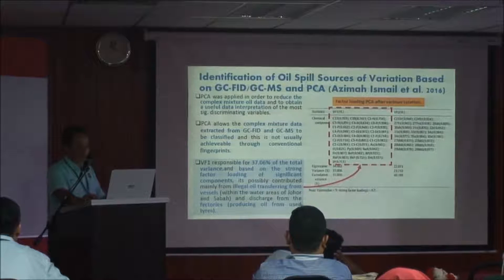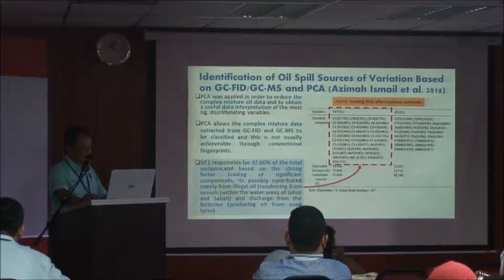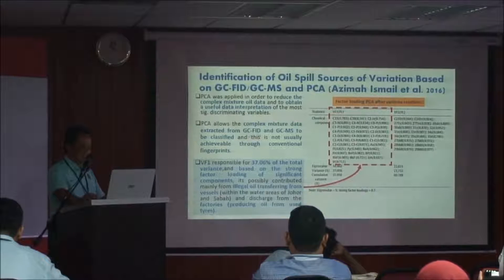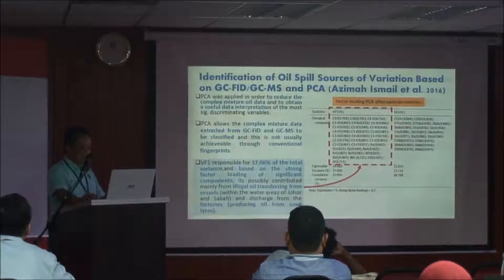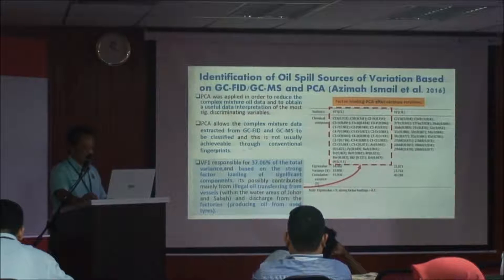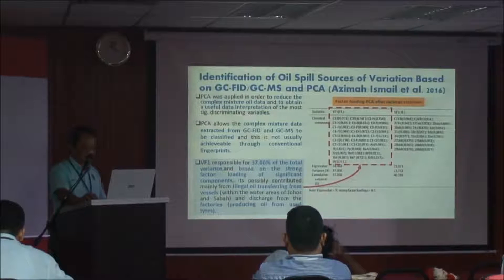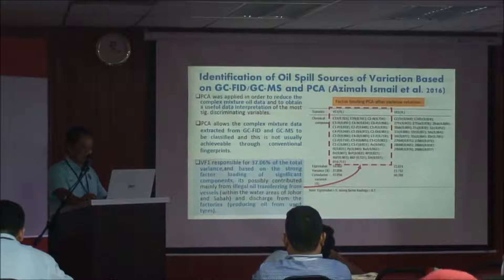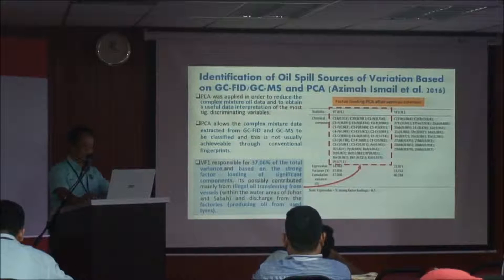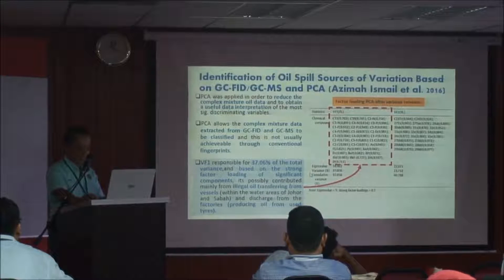Attribution of oil spill source of variation based on GCFID, GCMS, and PCA: PCA was applied to reduce the complex mixture of oil data and obtain useful attribution of the most significant discriminating variables. PCA allows complex mixture data extracted from GCFID and GCMS to be classified — not achievable through conventional fingerprinting. Varimax Factor 1 responsible for 37.06% of total variance is possibly contributed mainly from illegal oil transferring from vessels within the water area of Johor and Sabah, and discharge from a factory processing oil from used tires.